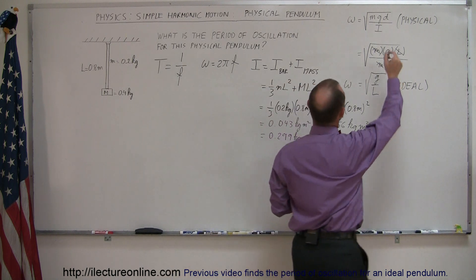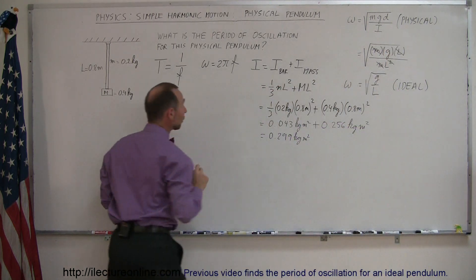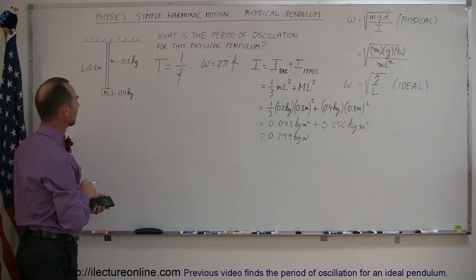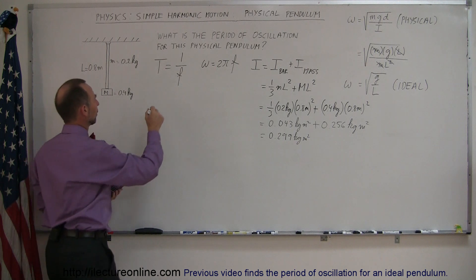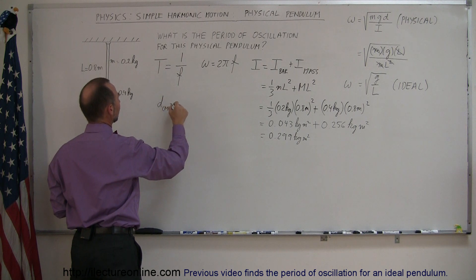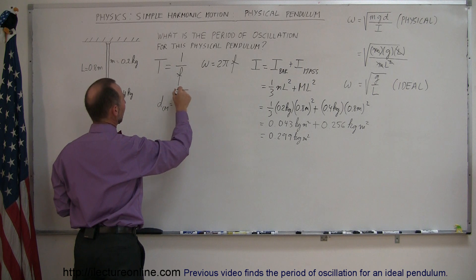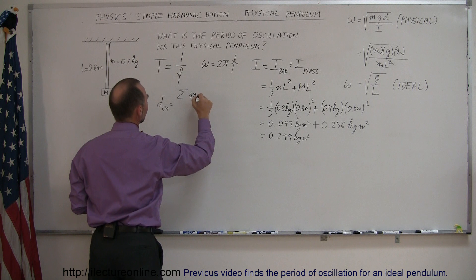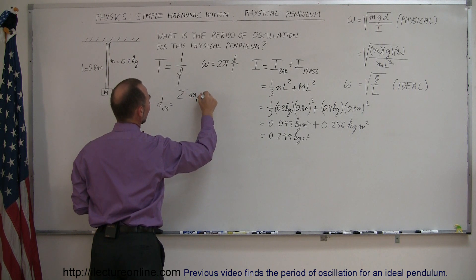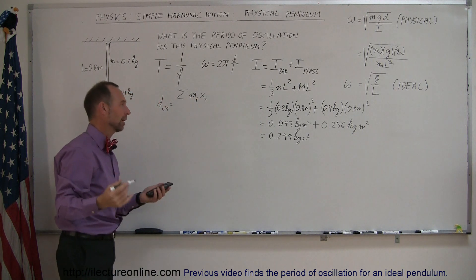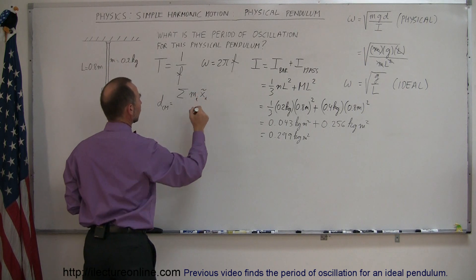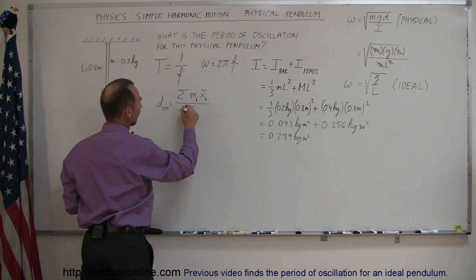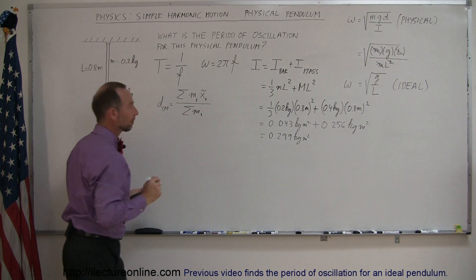Now we have the moment of inertia. We still need the distance to the center of mass of this pendulum. The distance to the center of mass equals the sum of each mass times its individual center of mass distance, all divided by the sum of all the masses.